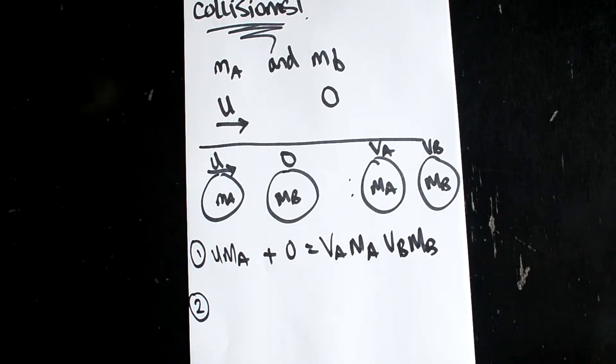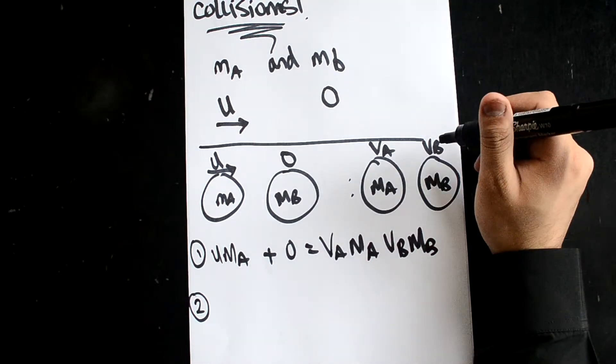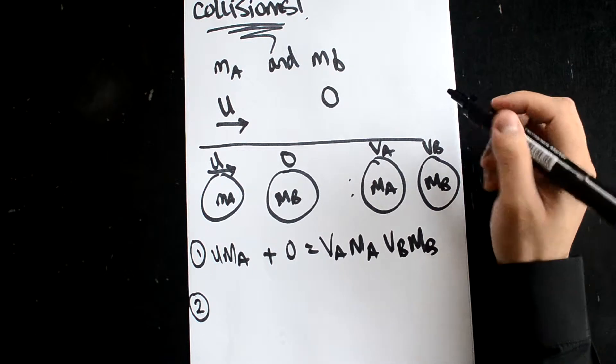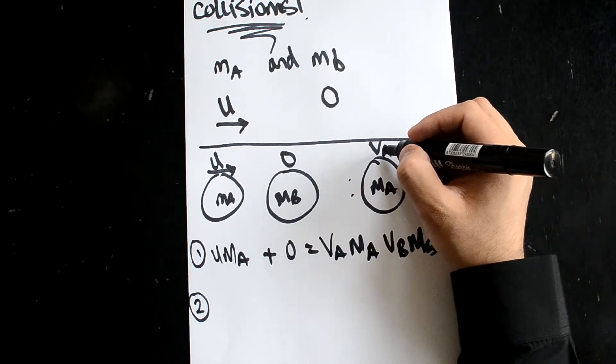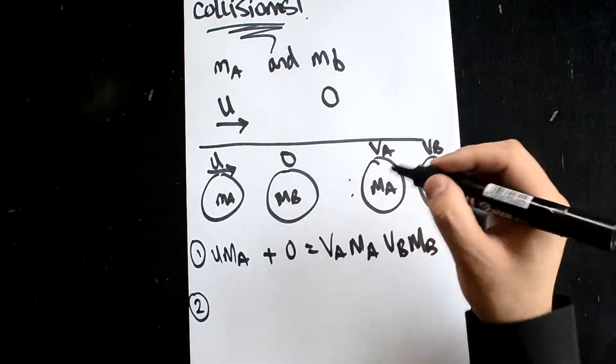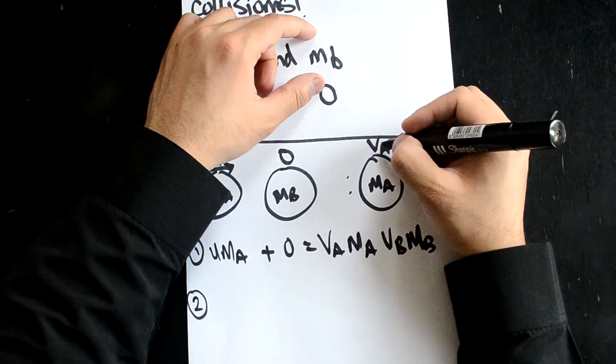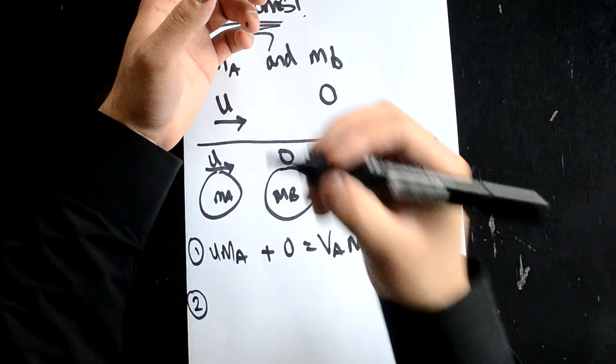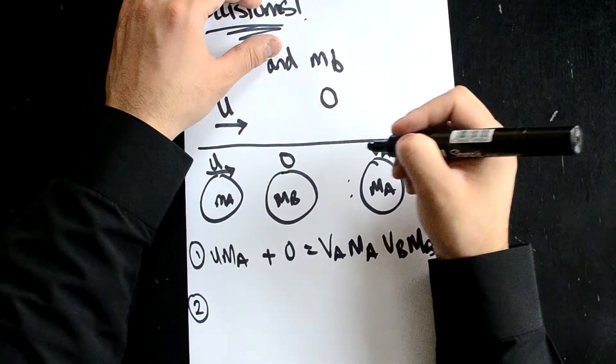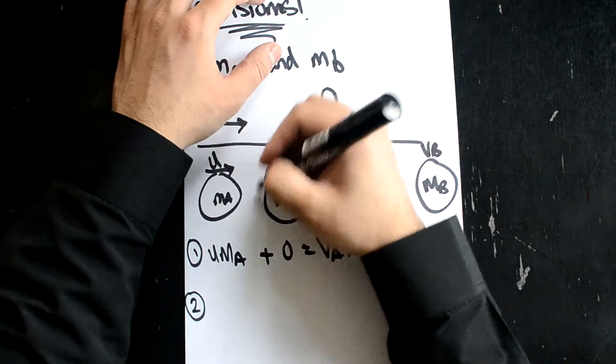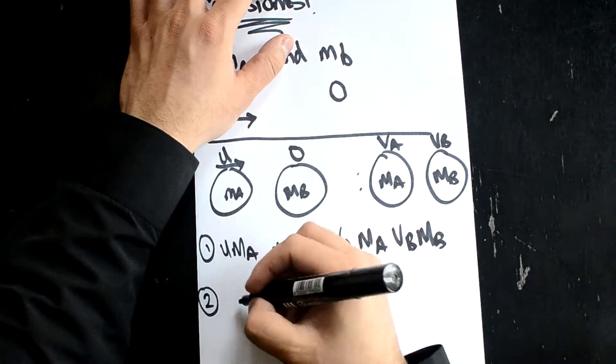Now let's look at a second equation. You need to remember that Newton's law of restitution states that the difference of the velocities of the balls after collision, so vb minus va, equals minus e multiplied by the velocity of this ball minus the velocity of this ball.